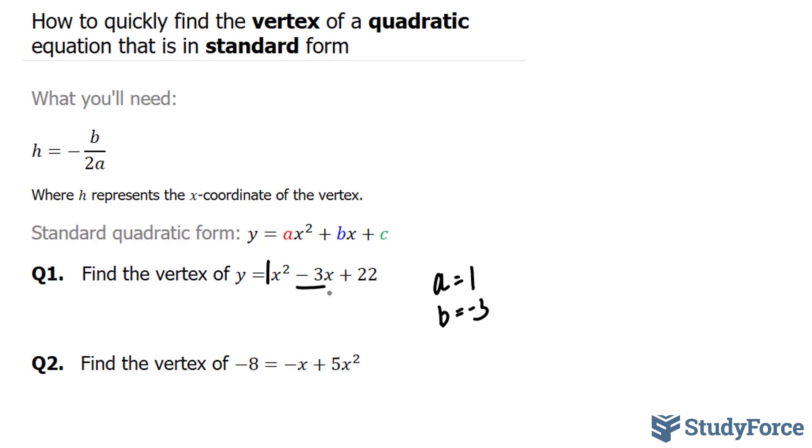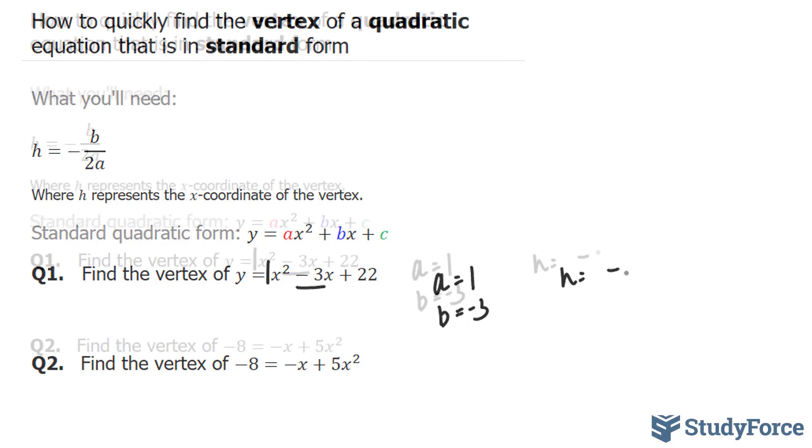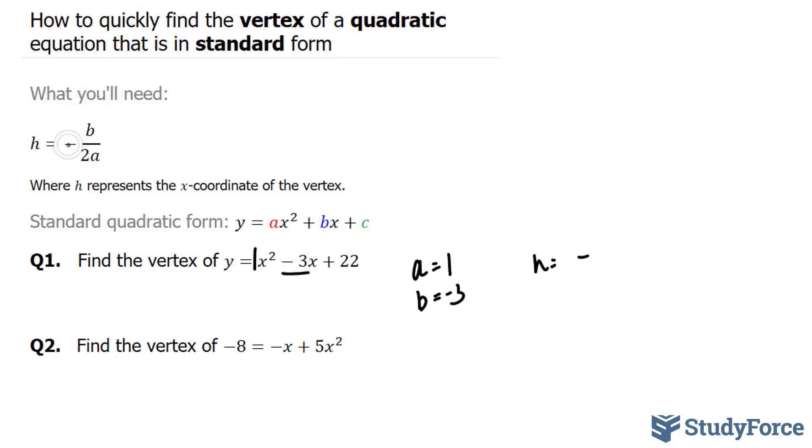All we have to do now is plug in these values into this formula, where we end up with h is equal to negative, and this negative is coming from the formula, and I'm going to place it at the top with the denominator along with b, which represents negative 3, over 2 times 1. Negative negative 3 is simply 3, and 2 times 1 is 2, and this is equal to exactly 1.5.